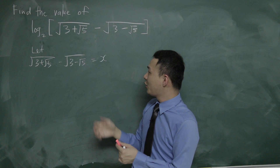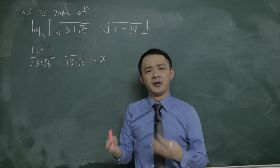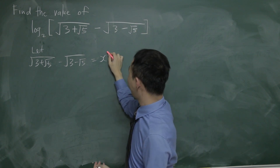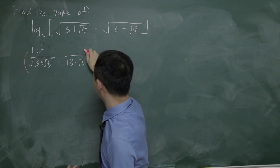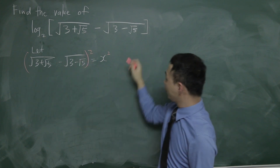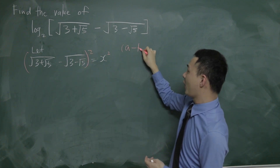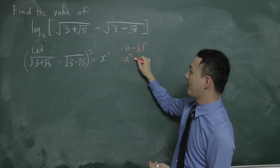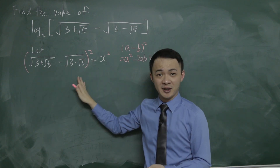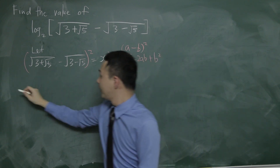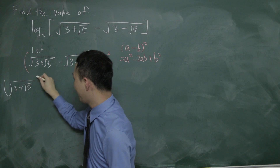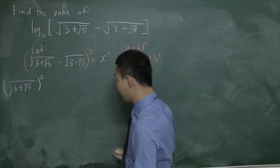The first thing I want to do is get rid of the square root. The idea is to square both sides. When I square the right side, I treat it as (a − b)², where a = √(3+√5) and b = √(3−√5). Expanding gives a² − 2ab + b², which equals x².